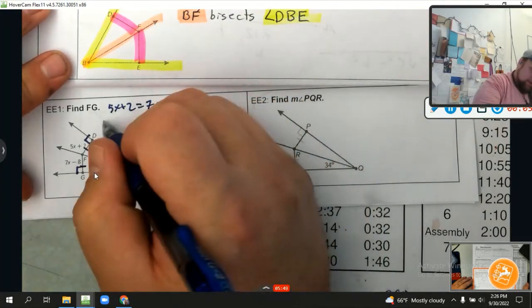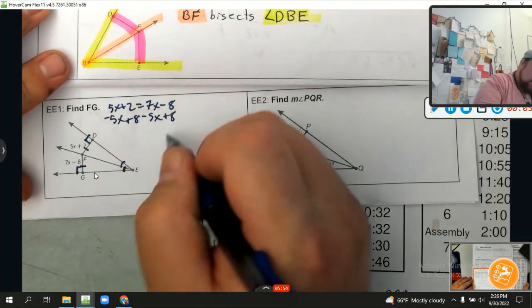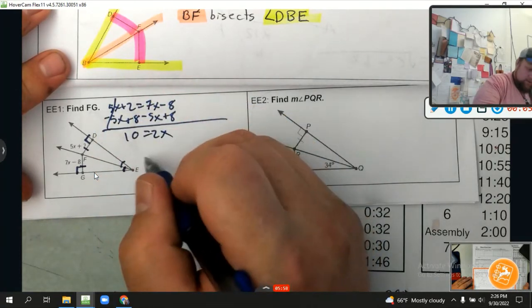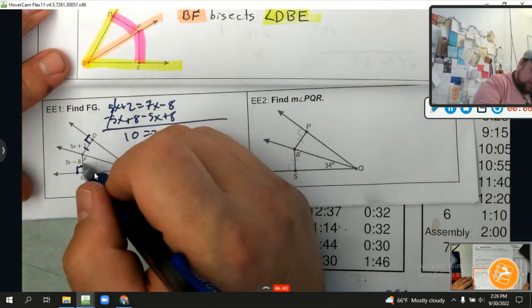So I'm going to subtract 5x from both sides and add 8. And boom, 10 equals 2x, or 5 equals x. But it wants FG, wants us to find this side right here.